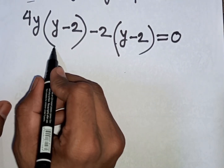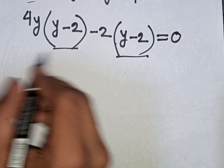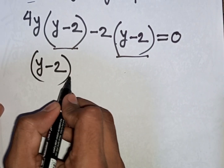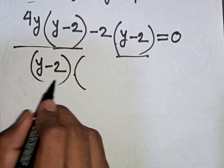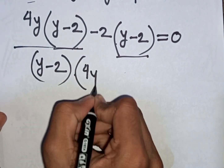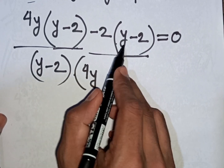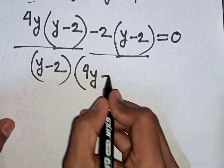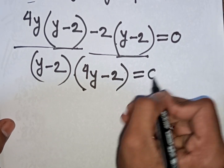We see that (y minus 2) appears in both terms and is common. So we factor out (y minus 2), giving us (y minus 2)(4y minus 2) equals 0.